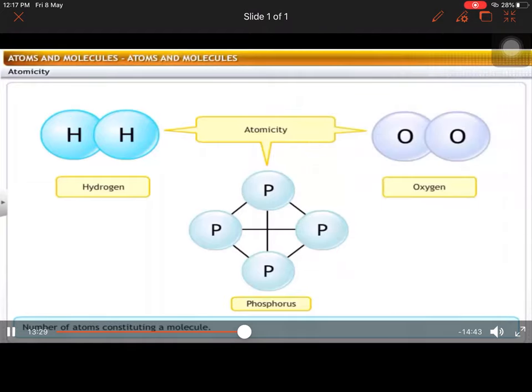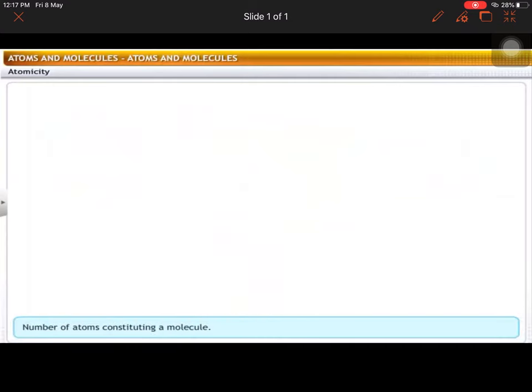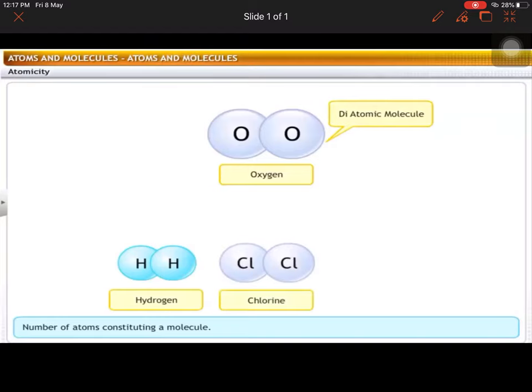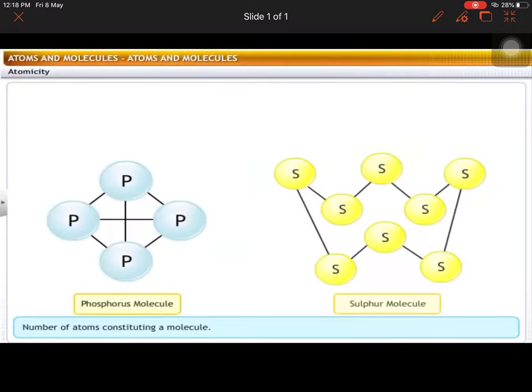Next point - let us look at some examples. An oxygen molecule has two atoms of oxygen and is known as a diatomic molecule. Hydrogen, chlorine, nitrogen, etc. also exist as diatomic molecules.